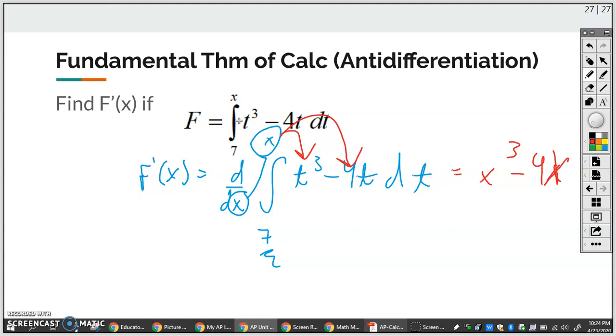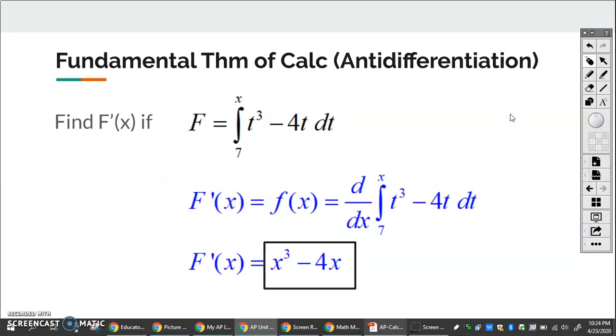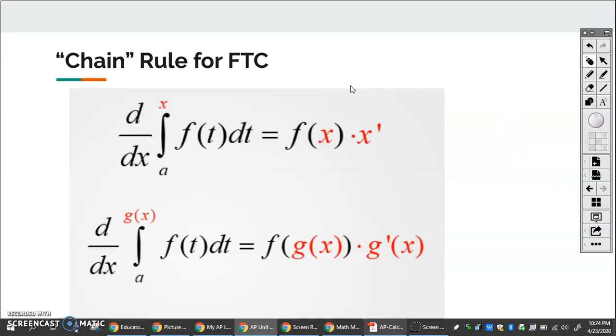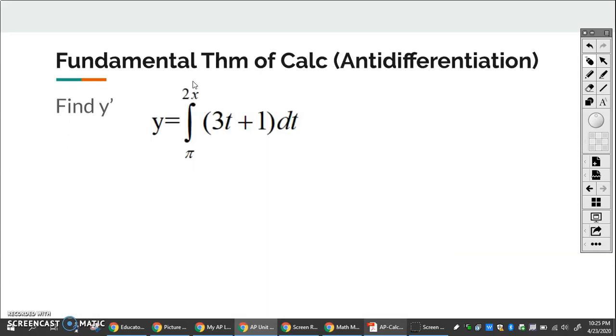So the derivative and the integral cancel each other out. Just plug in the variable on the top if you're taking the derivative here. You also have to keep in mind the chain rule on this type of problem. So if you have a function on the upper limit, plug the function into the variable and then just make sure you multiply by the derivative of that function on top.